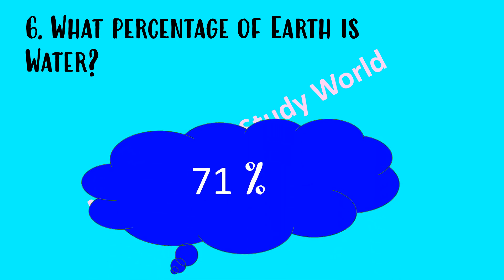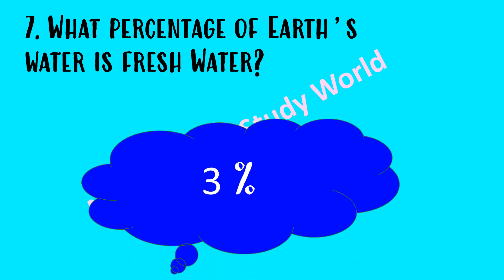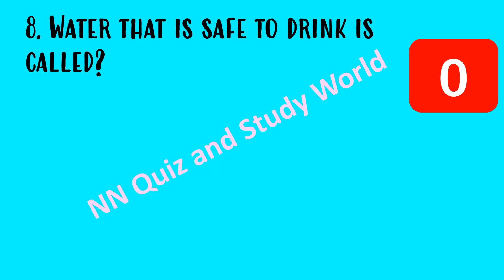What percentage of Earth is covered with water? The answer is 71 percentage. What percentage of Earth's water is freshwater? The answer is three percentage of the Earth's water.